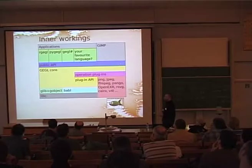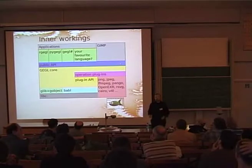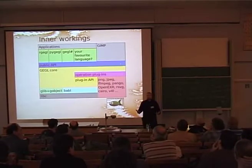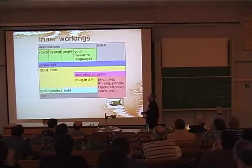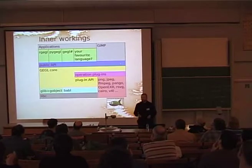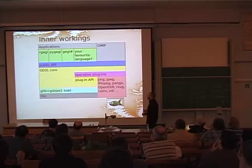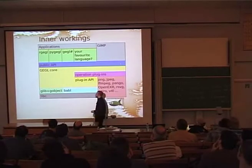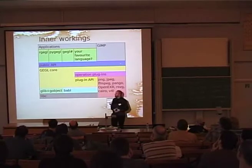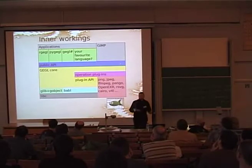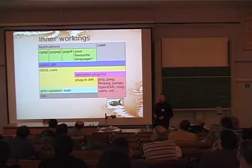Beyond the public API is the GEGL core, which hasn't gotten as much attention but works — providing a working implementation of what the public API proposes. It will need to be reworked, but that can be done without changing the public API. The GEGL core builds directly on GLib GObject, which is a nice enhanced standard library for C, providing object orientation, module loading, property setting, and cross-platformness.